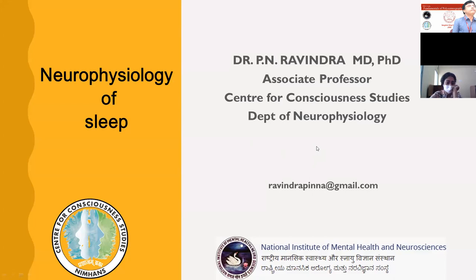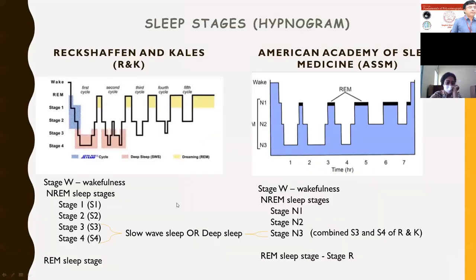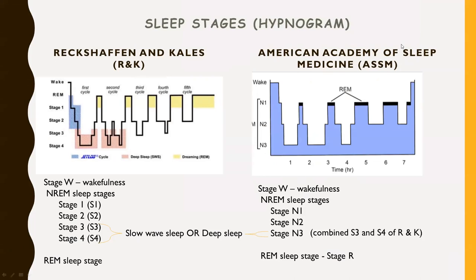We now proceed to understanding the neurophysiology of sleep. Sleep has been categorized into NREM sleep and REM sleep. The nomenclature used to label the different stages of sleep is now the AASM criteria.